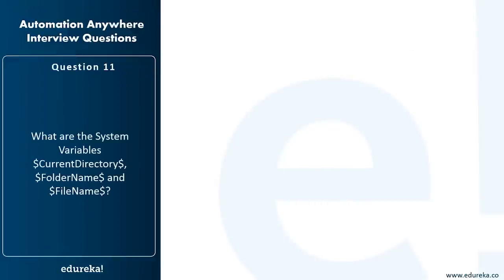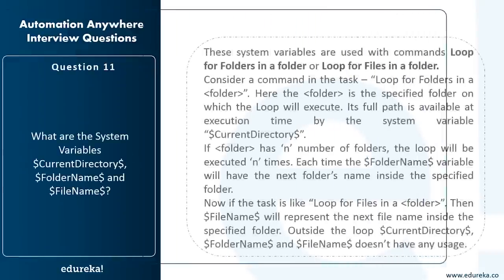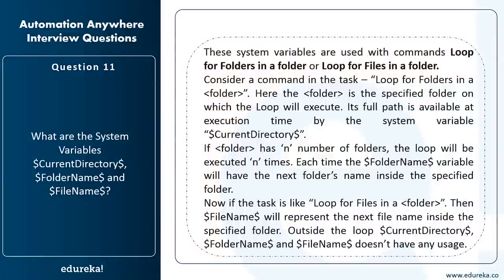What do the system variables Current Directory, Folder Name, and File Name mean? These variables are used with loop commands — Loop For Folders in a Folder or Loop For Files in a Folder. The folder is the specified folder on which the loop executes, requiring a full path at execution time provided via Current Directory. If a folder contains N subfolders, the loop executes N times, and the Folder Name variable holds the name of each subfolder in sequence. Similarly, when looping through files, the File Name variable represents the next file name inside the specified folder. Outside these loops, these variables have little usage, but inside loops they are very useful for designing large, complicated tasks.